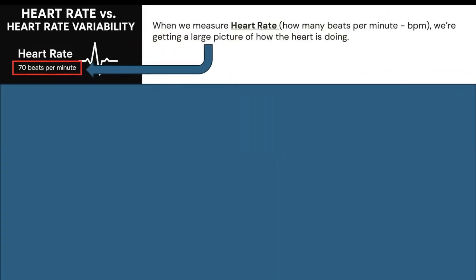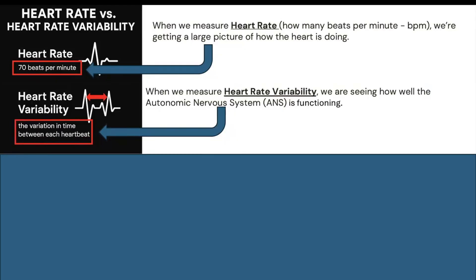First, let me explain the difference between heart rate versus heart rate variability. When we measure heart rate, we're measuring how many beats per minute, or BPM, and we're getting a large picture of how the heart is doing — something like 70 beats per minute. However, when we measure heart rate variability, we're seeing how well the autonomic nervous system is functioning. Heart rate variability is about the variation in time between each heartbeat — it's this variation that we're looking at.